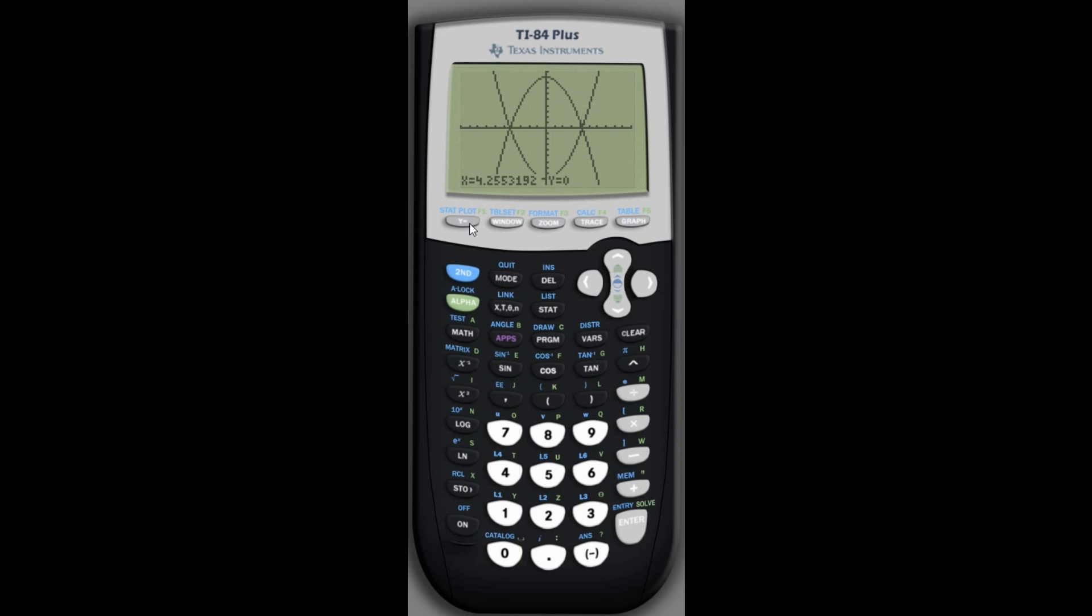Yeah, 4.3. So I'm going to want to restrict it in between negative 4.3 and 4.3. So how do I do that?